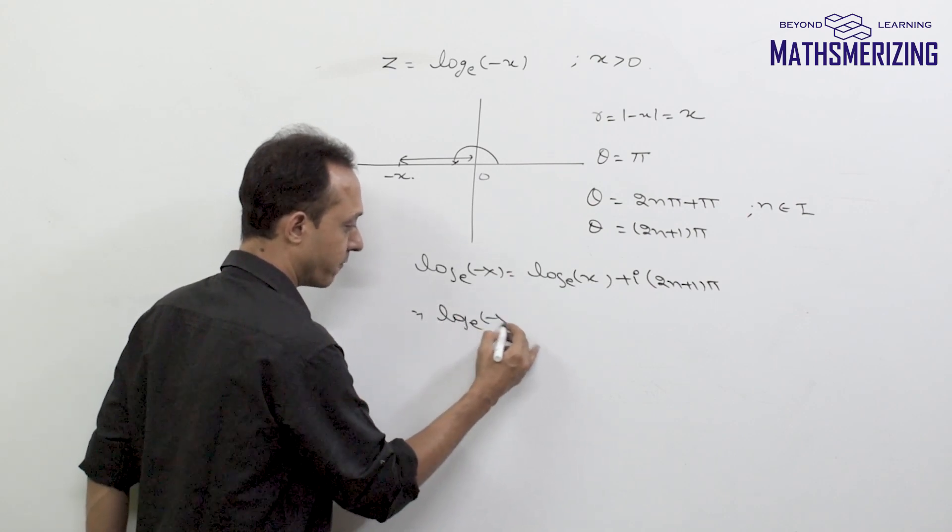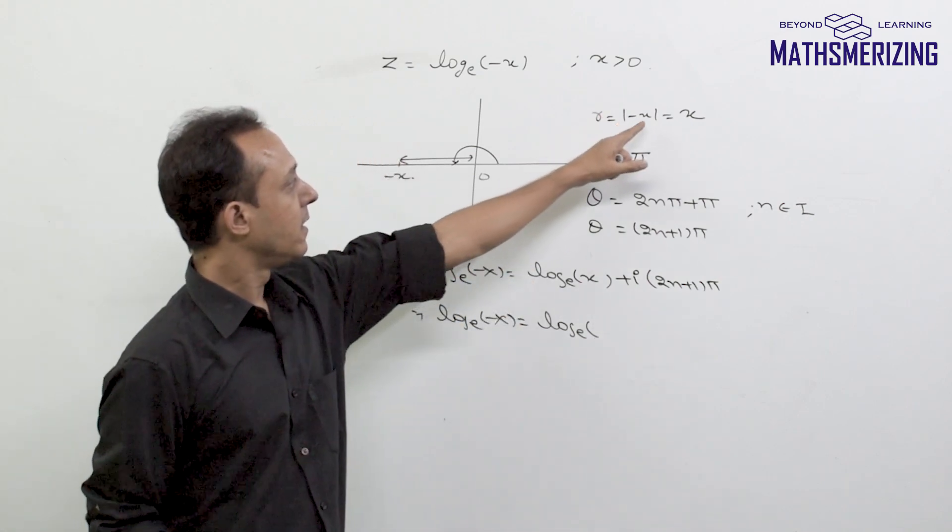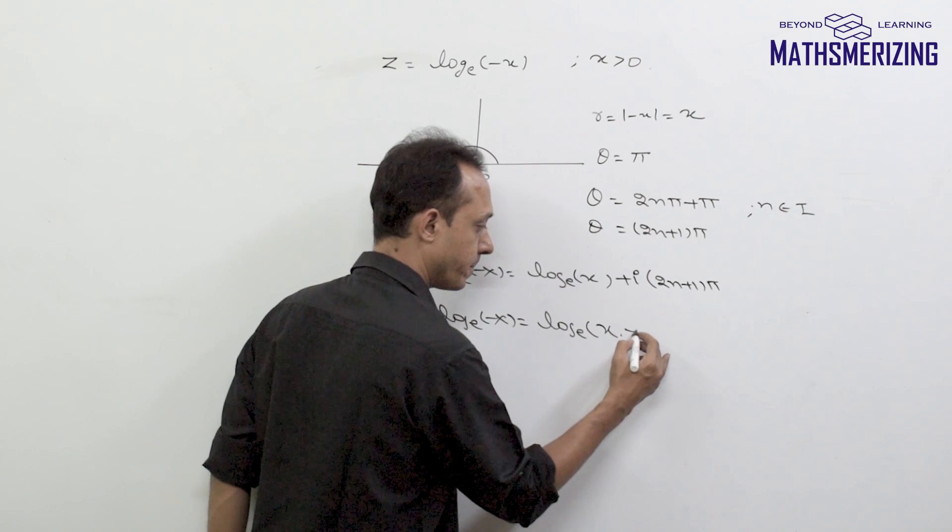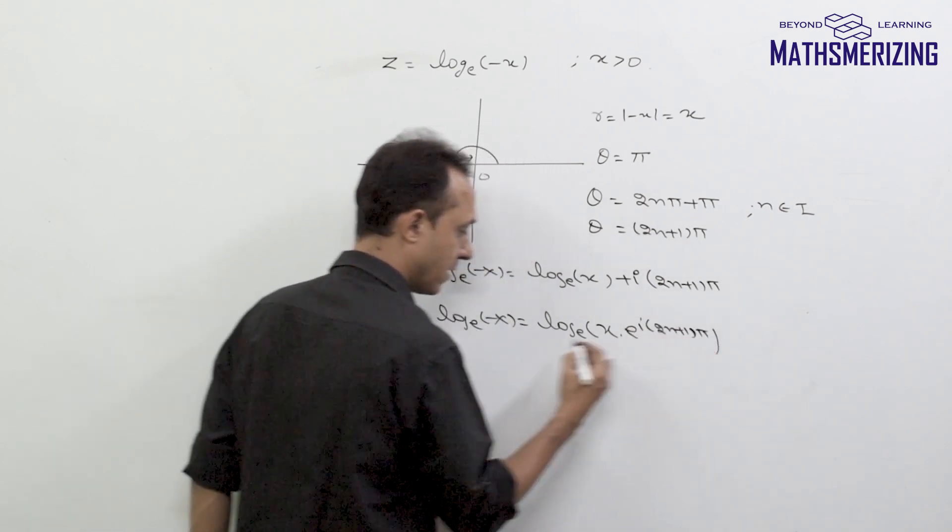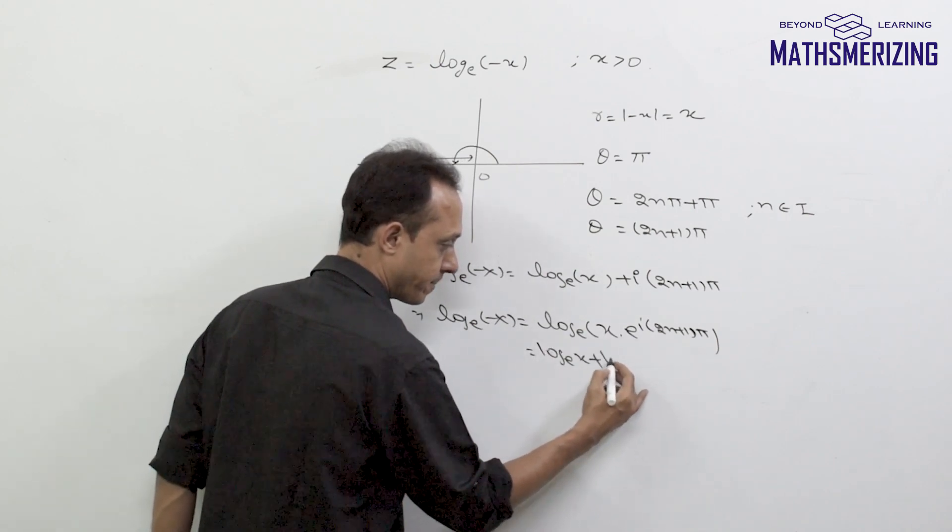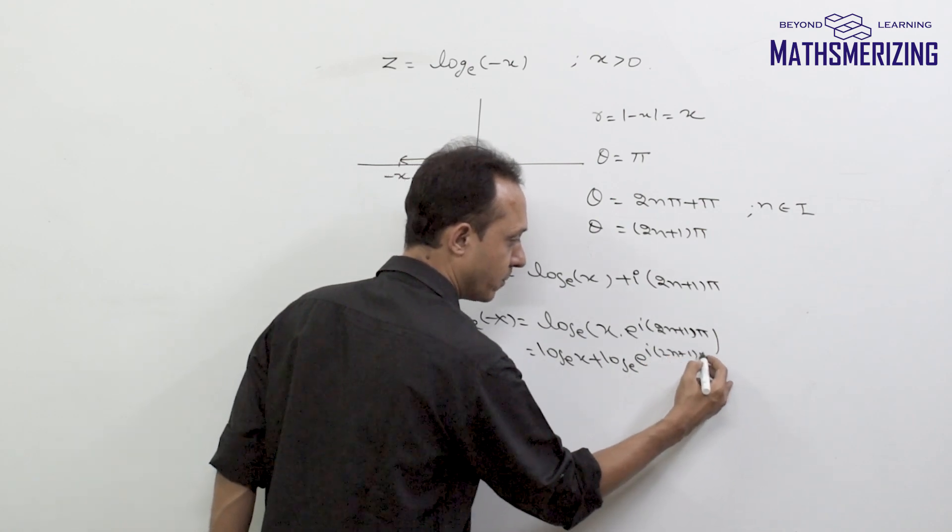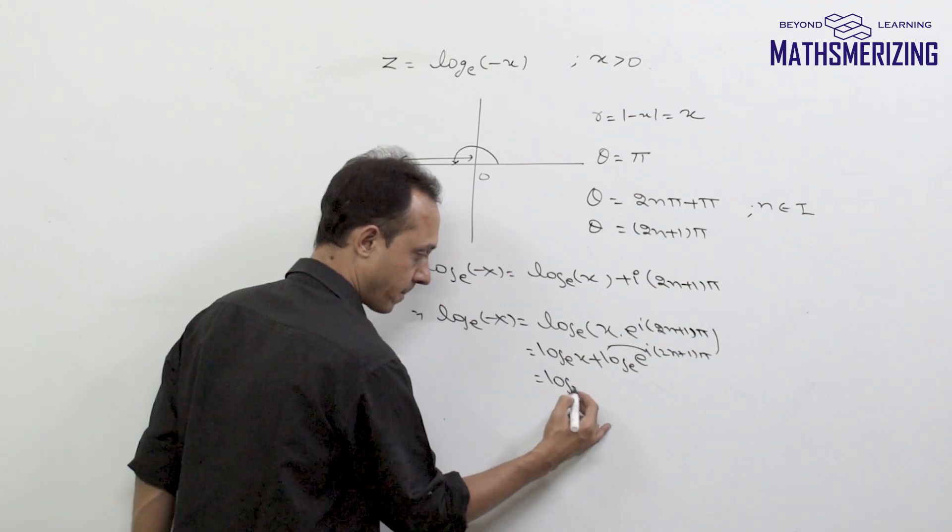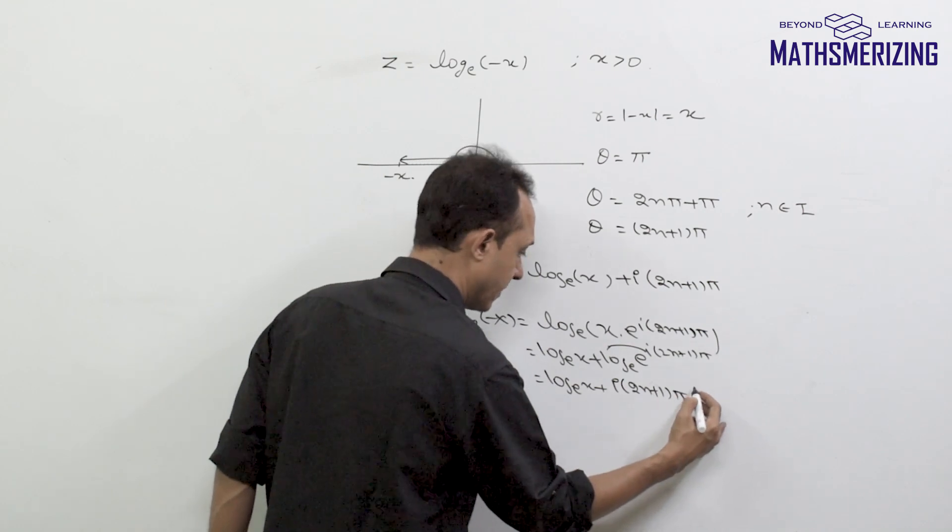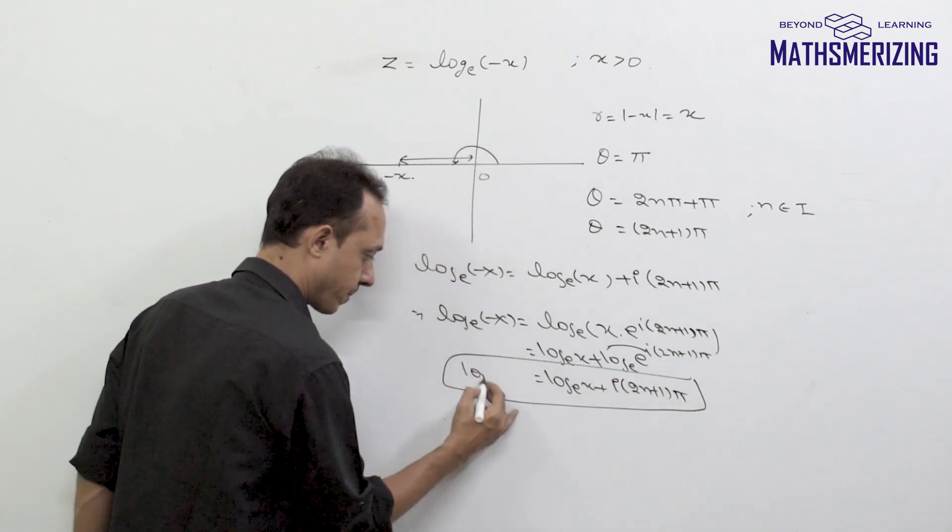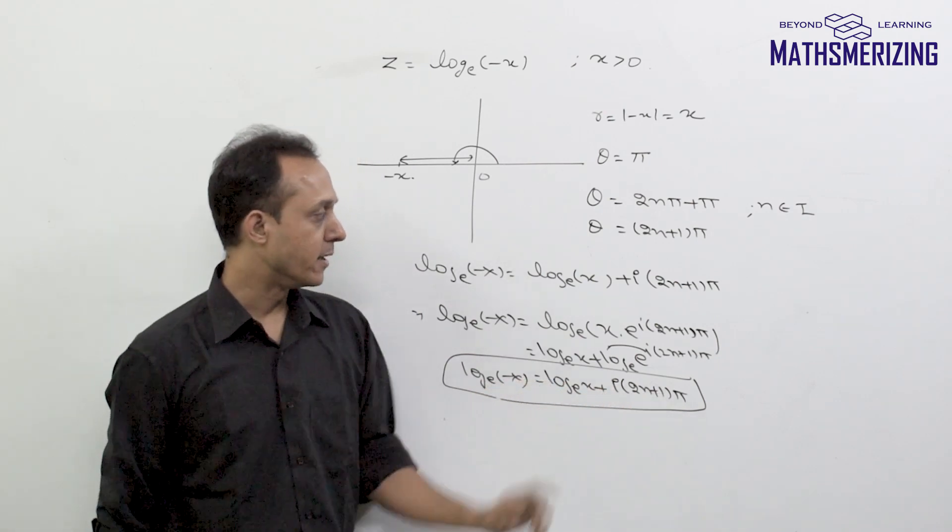Or we can go with the general proof which is log of minus x. I can write minus x as r into e to the power i*theta so I'll write x into e to the power i*(2n + 1)*pi. Now log m into n is log m plus log n so there will be log x and log e to the power i*(2n + 1)*pi so I'll take this power out so this is log x and then i*(2n + 1)*pi so again we'll get the same result which is log of minus x will be log x plus i*(2n + 1)*pi.